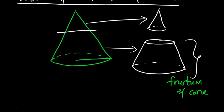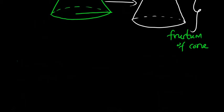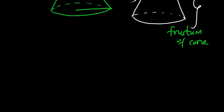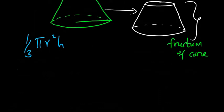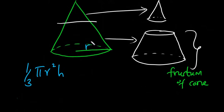In that video where we learned how to calculate the volume of a cone — and I'm going to leave the link to it in the description box so that if you never had a chance to look at it, you can watch it and learn how to find the volume of a cone — we said that we find the volume of a cone using the formula: one-third pi r squared h. So if this is the radius and we have the perpendicular height, this is the height and the radius.